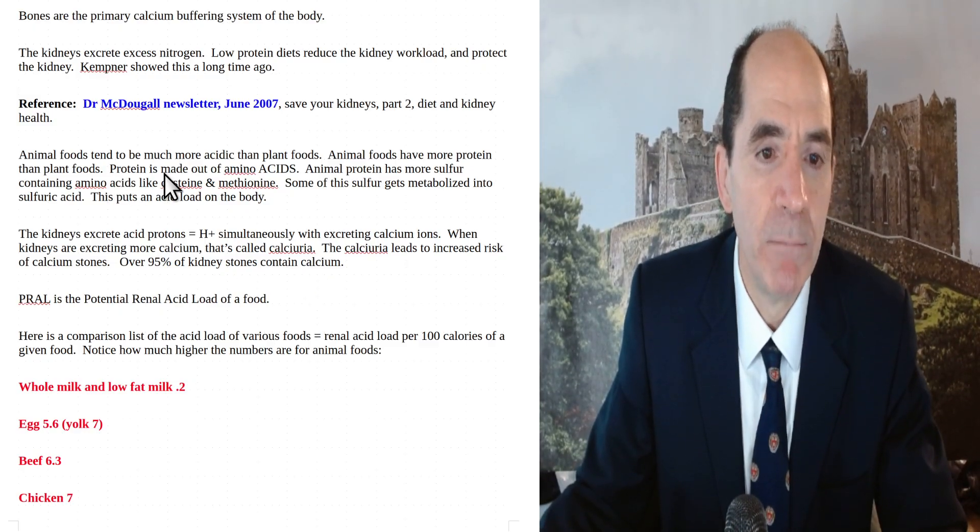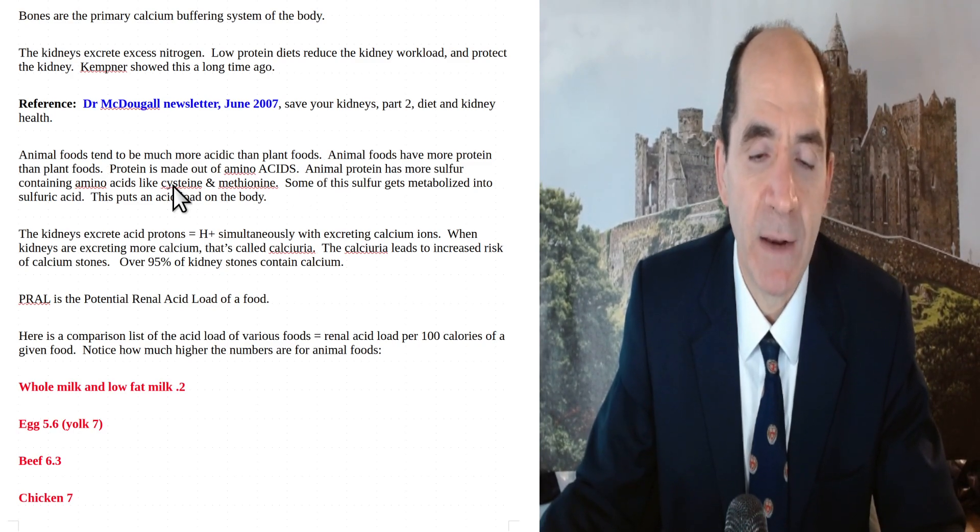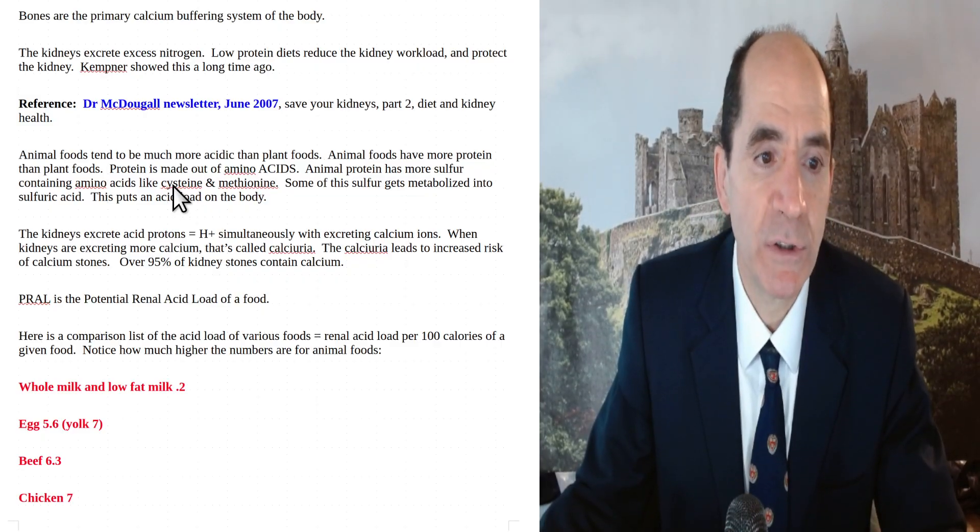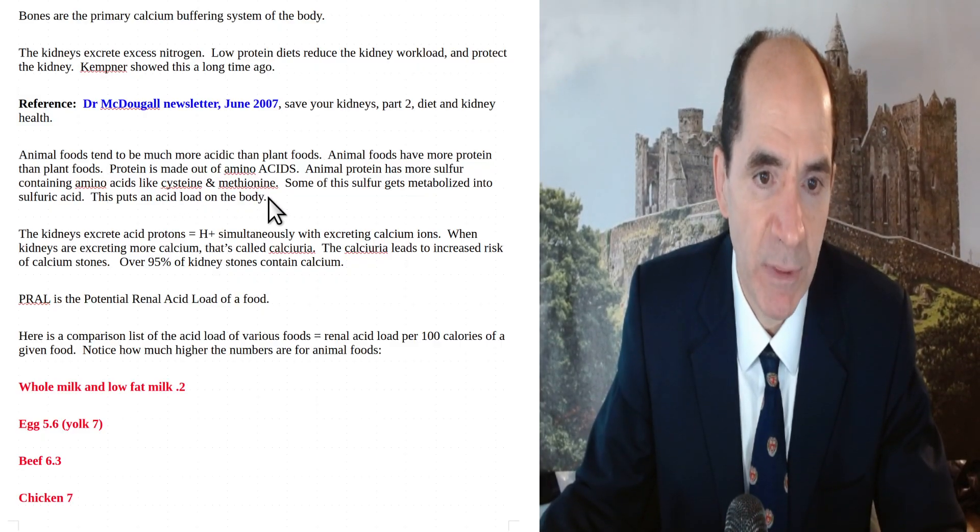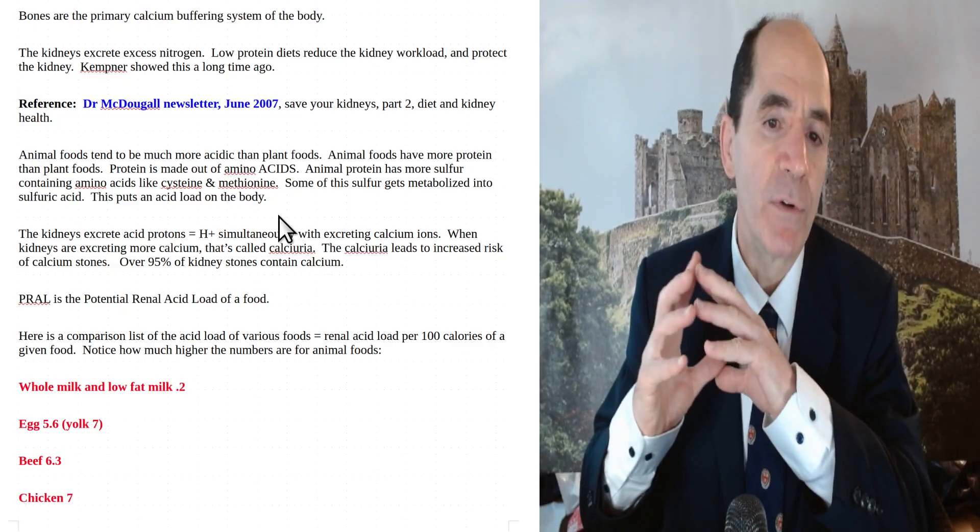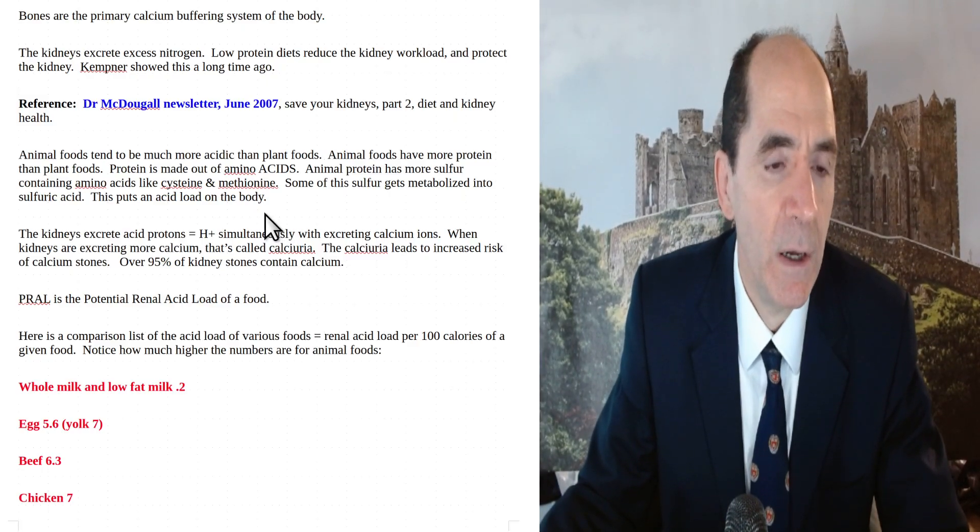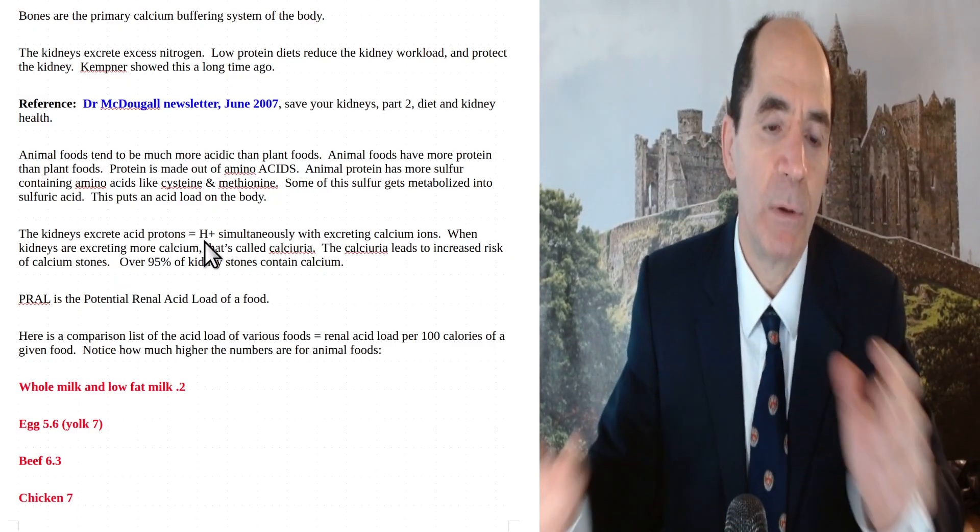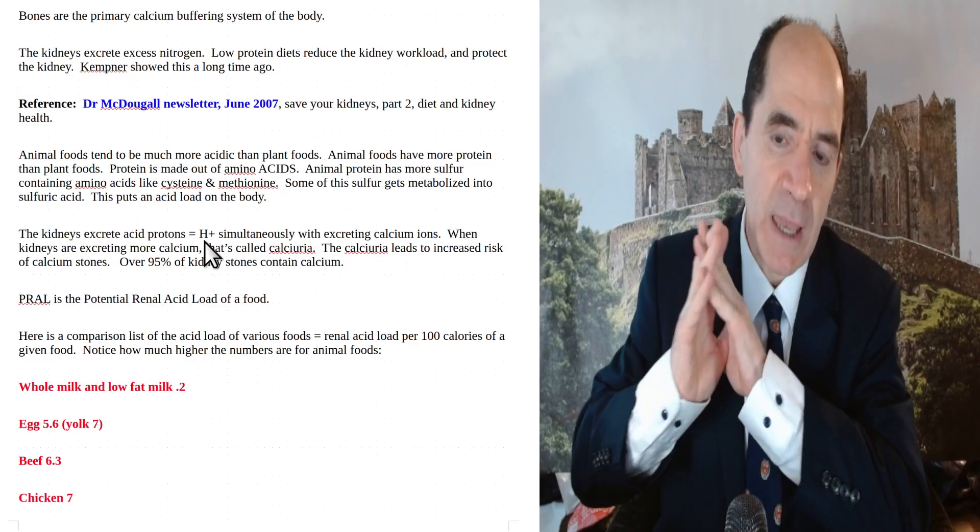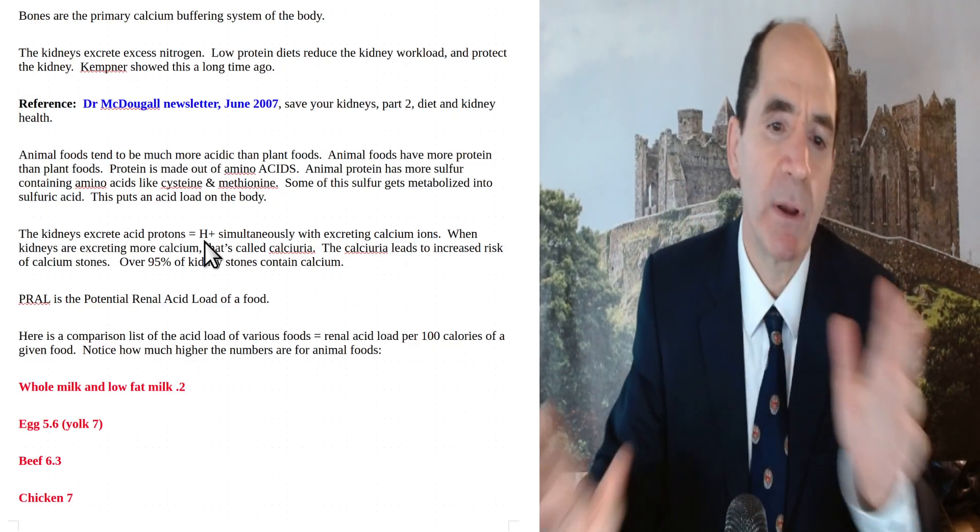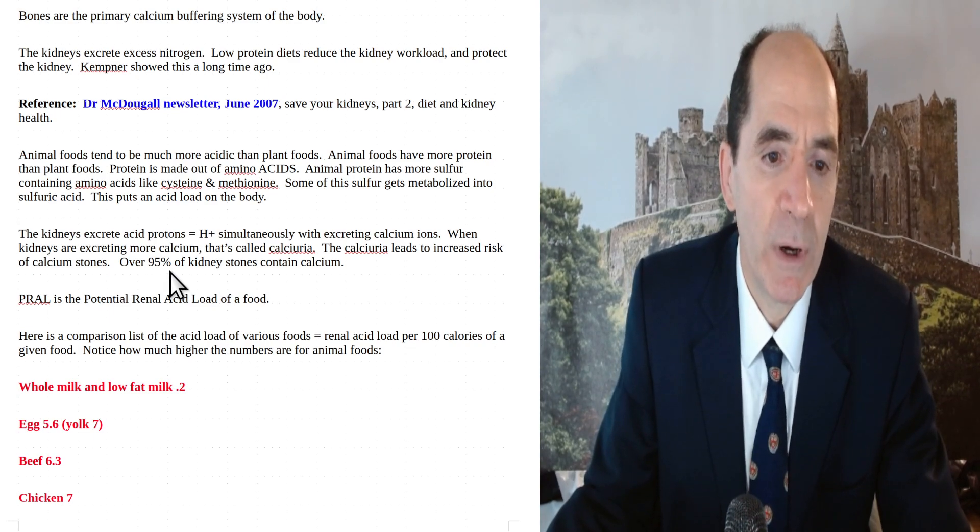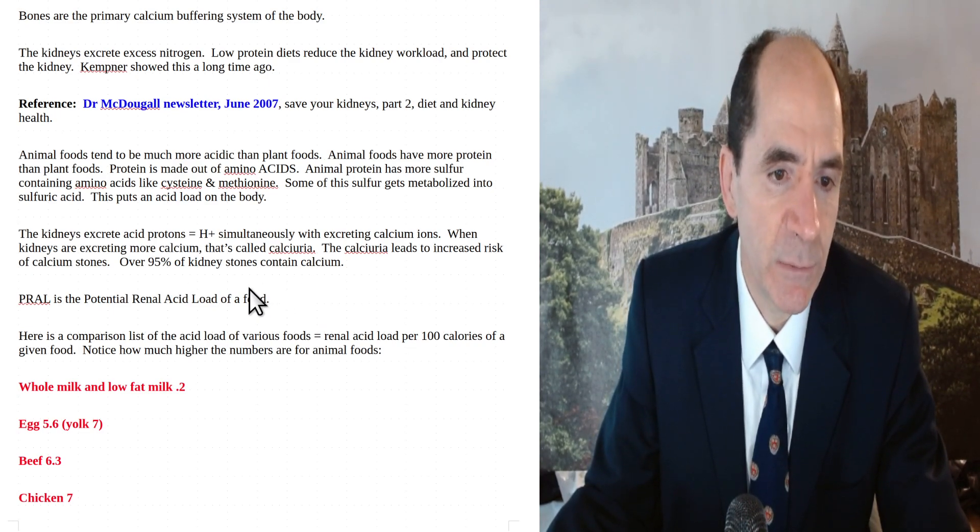Animal foods tend to be much more acidic than plant foods. Animal foods have more protein. Animal protein has more sulfur containing amino acids like cysteine and methionine. The sulfur gets metabolized into sulfuric acid and that puts an additional acid load on the body. That's going to give you metabolic acidosis. The kidneys excrete acidic protons, hydrogen, H+, and simultaneously they excrete calcium. That calcium comes from the bone. When the kidneys are excreting more calcium, it's called calciuria, leads to increased risk of calcium stones. Over 95% of kidney stones contain calcium.